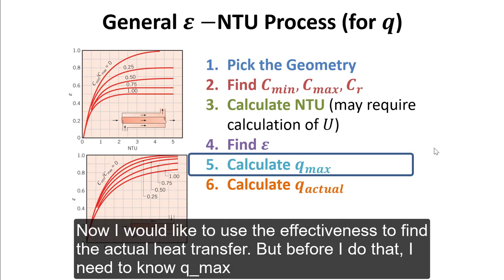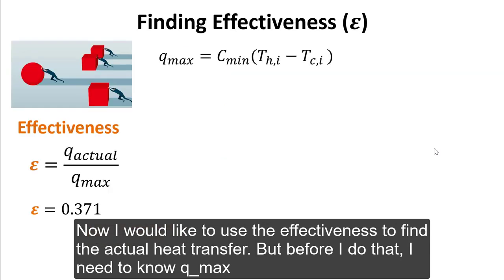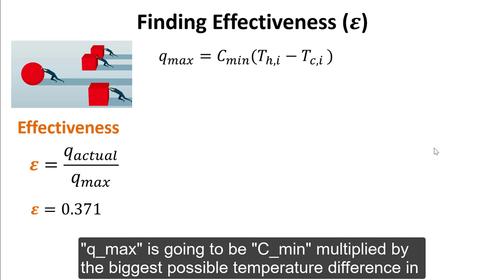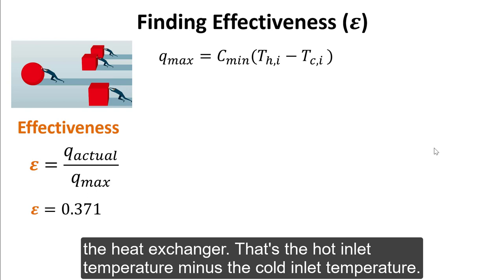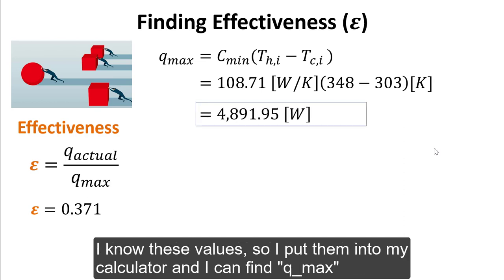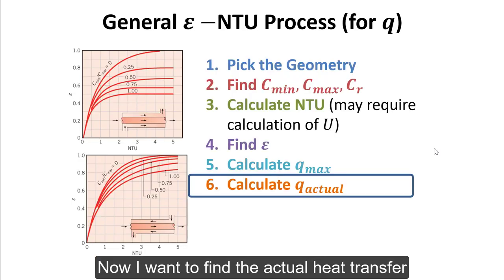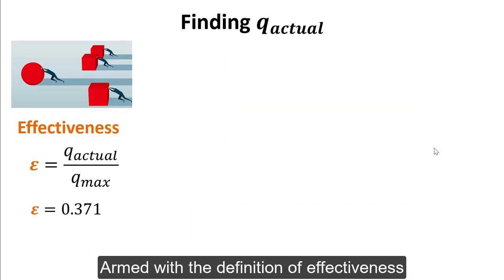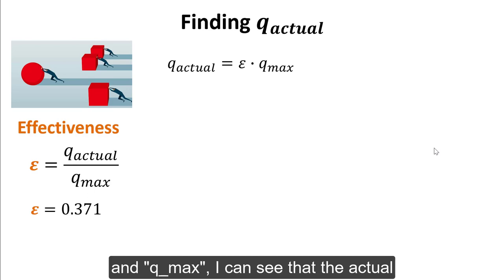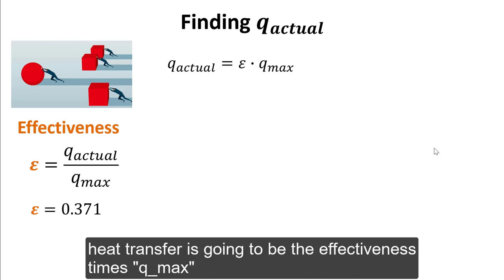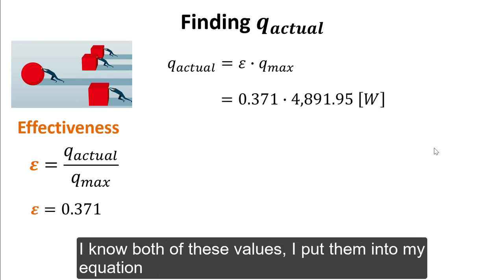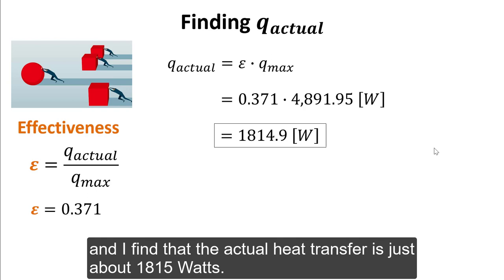Now I'd like to use the effectiveness to find the actual heat transfer, but first I need to know Q max. Q max is C min multiplied by the biggest possible temperature difference in the heat exchanger — that's the hot inlet temperature minus the cold inlet temperature. I know these values, so I put them into my calculator and find Q max. Then the actual heat transfer is the effectiveness times Q max, and I find that the actual heat transfer is just about 1,815 watts.